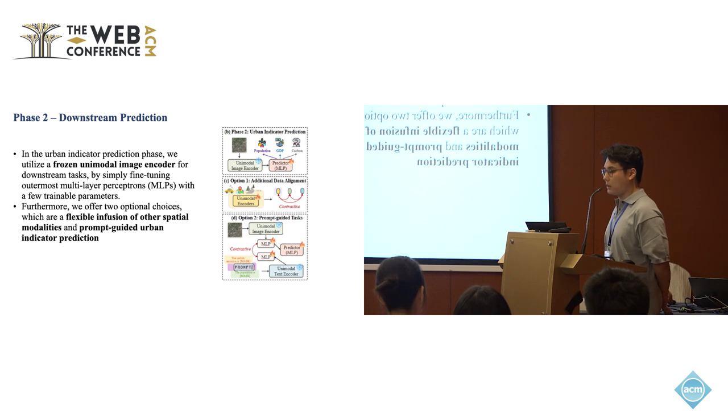The next phase would be the downstream indicator prediction. In this phase, which is also pretty simple, we utilize the frozen unimodal image encoder for diverse downstream tasks.